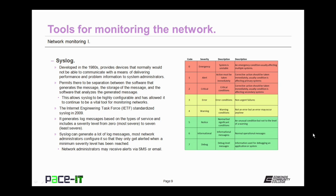Syslog can generate log messages based on the types of services that are running, and it includes a severity level ranging from 0, the most severe, up through 7, the least severe. Most network administrators configure it so they only get alerted when a minimum severity level has been reached. You almost never want to capture debug log events unless you are actively debugging an application or service, because it generates so much information. Syslog can be configured so that administrators receive alerts via text message, SMS, email, or even voicemail.